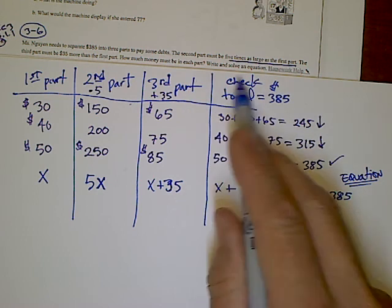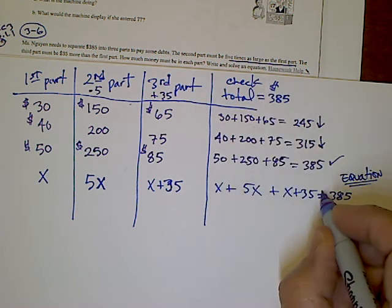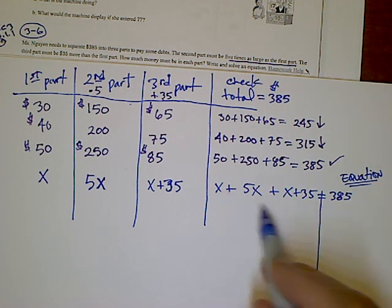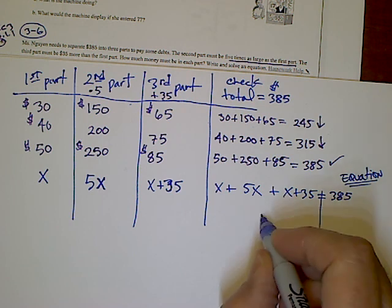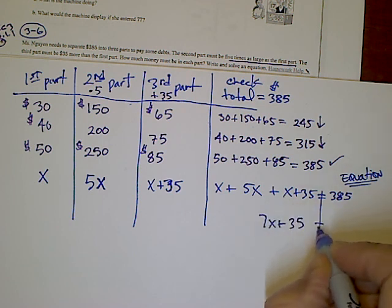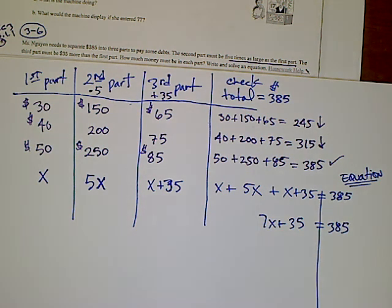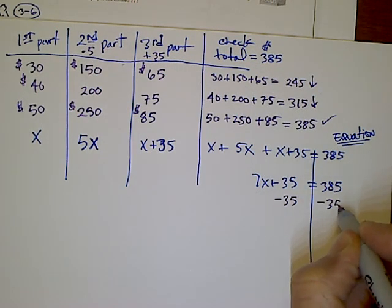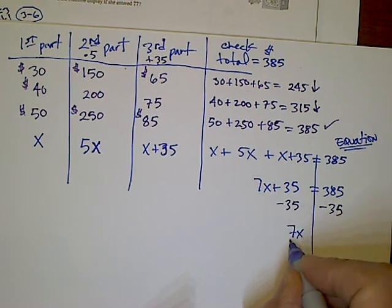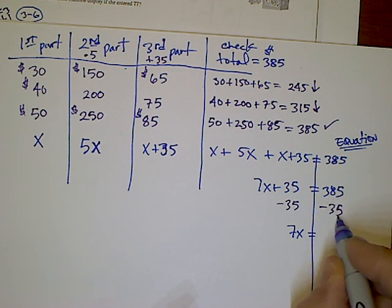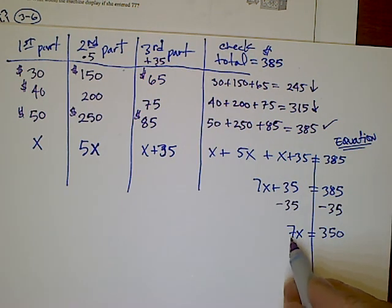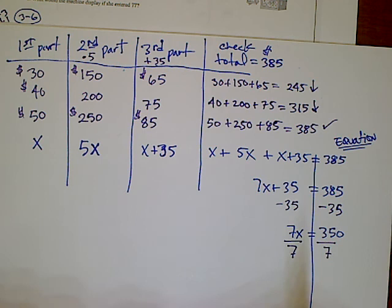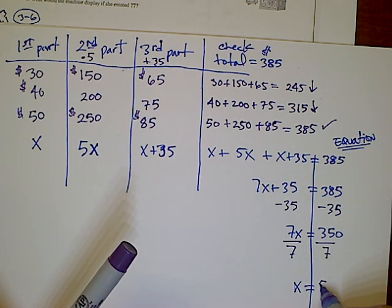Now to solve the equation. The first step is to combine like terms. If I have x, 5x, and x, all together that's 7x plus 35 equals 385. Then getting x alone is the process of solving. Subtract 35 from both sides to get the variable expression alone. So I end up with 7x equals 350. Then divide both sides by the coefficient 7 to get x alone. My x equals 50.